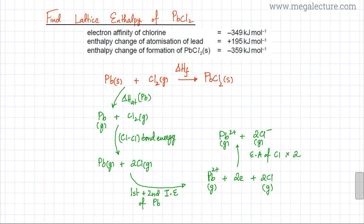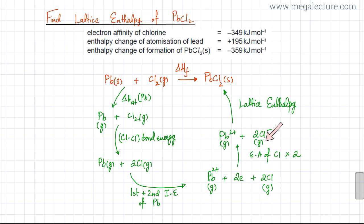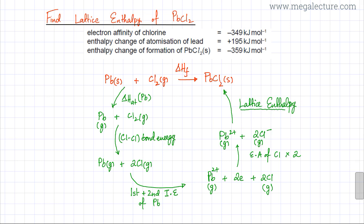We now reach the last step to complete the Born-Haber cycle: the lattice enthalpy. This is when gaseous ions combine to form one mole of a solid ionic lattice. This is the value that needs to be found, as it is the only value not provided in the question.